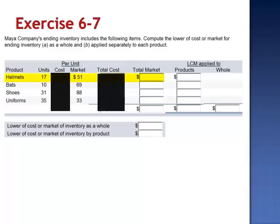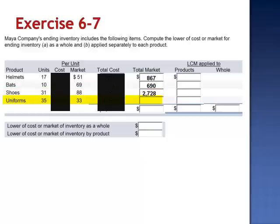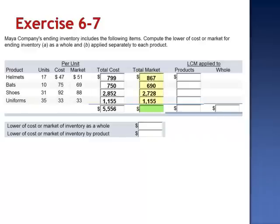In order to replace the 17 helmets, it would cost $51 per helmet. 17 helmets at the $51 market replacement cost is $867. It would cost $69 to replace the bats. 10 multiplied by 69 is $690. It would cost $88 per pair to replace the shoes. 31 multiplied by 88 is $2,728. And it would cost $33 to replace each of the uniforms. 35 multiplied by 33 is $1,155. The total market value of the inventory is $5,440.